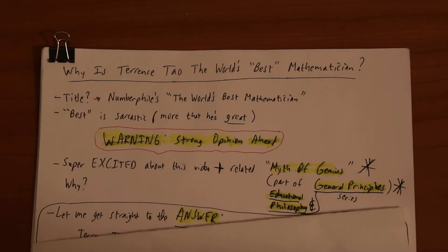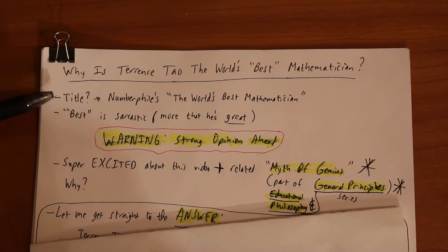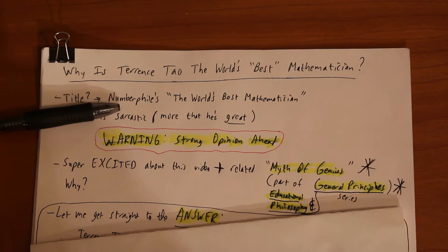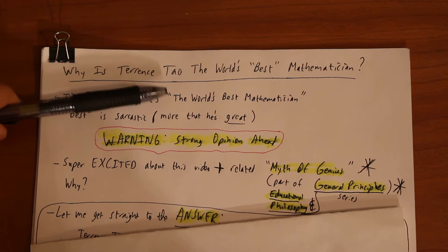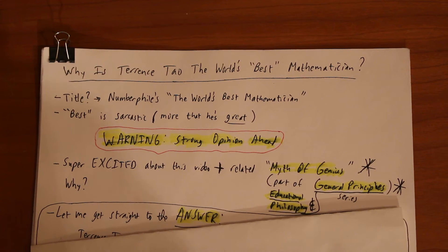Welcome back to The Art of Math. Greetings earthlings. Today's question and topic is: why is Terence Tao the world's best mathematician? First thing I want to start off with is why the title. This title is inspired by the video on Numberphile's YouTube channel 'The World's Best Mathematician' which is on Terence Tao.